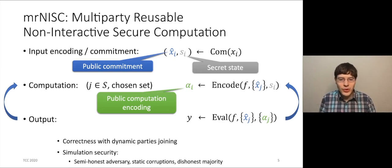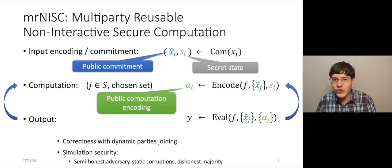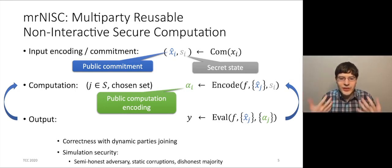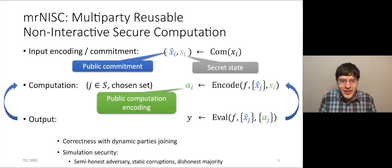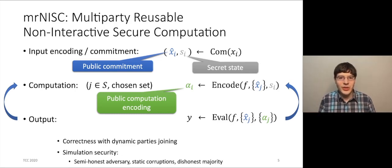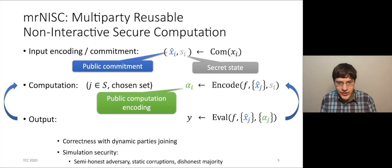Importantly, you should be able to perform this computation on any set of your choice and any function of your choice. You can use the same function on many different sets of parties, or many different functions on the same set of parties — everything is allowed. We want to achieve correctness even with dynamic party joining. And despite all of this, we still want to achieve a strong notion of security, namely simulation security, with semi-honest adversaries, static corruption, and dishonest majority, meaning even if all but one party is corrupt, we still ensure security for the non-corrupt party.